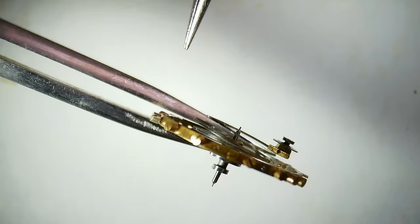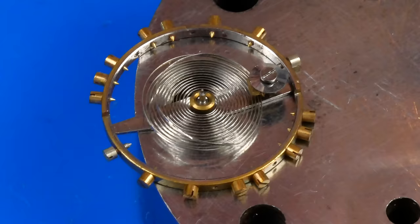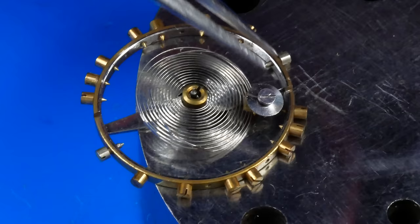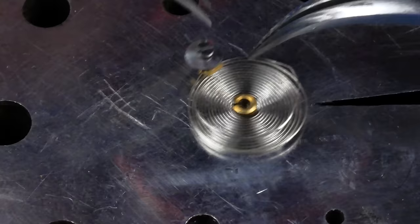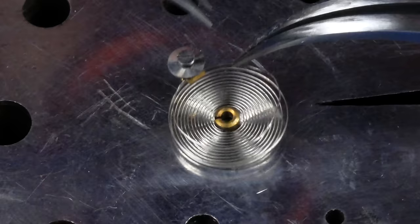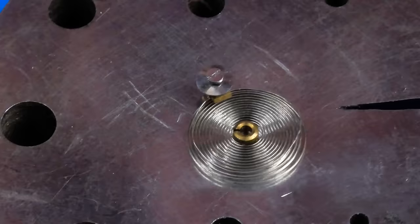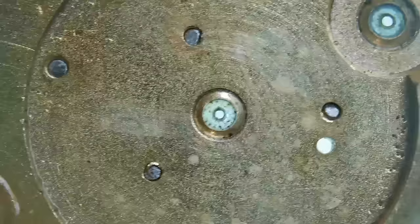This hairspring is going to need some work. Notice how the penultimate curve, the one before the breguet overcoil, is deformed upward. This must have contributed to the immobility of the balance I saw at the start. The hairspring collet is carefully levered off the balance staff. Here, I'm using a set of tweezers to gently manipulate the spring until it's both flat and concentric. The overcoil must also be concentric, allowing the collet to remain centered over the jewel hole through the full range of regulation.